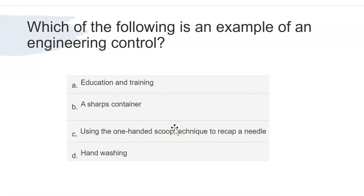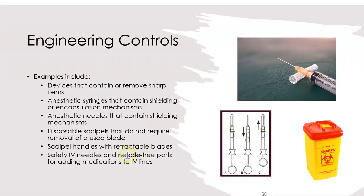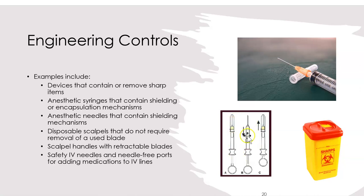Using the one-hand scoop technique is a good strategy to prevent needle-stick injuries, but it is not an engineering control. Engineering controls are actual devices. Examples include: a sharps container; a shielding mechanism on syringes and needles where you push down the cap to expose the needle, use it, then slide the shield back up so there is no puncture risk. This is much safer than recapping by hand.